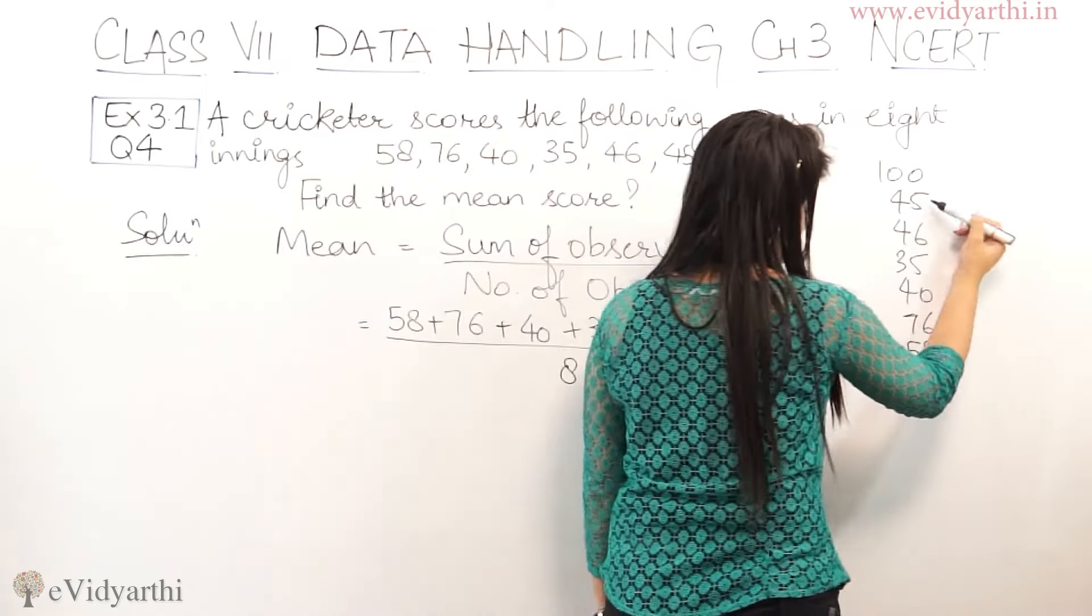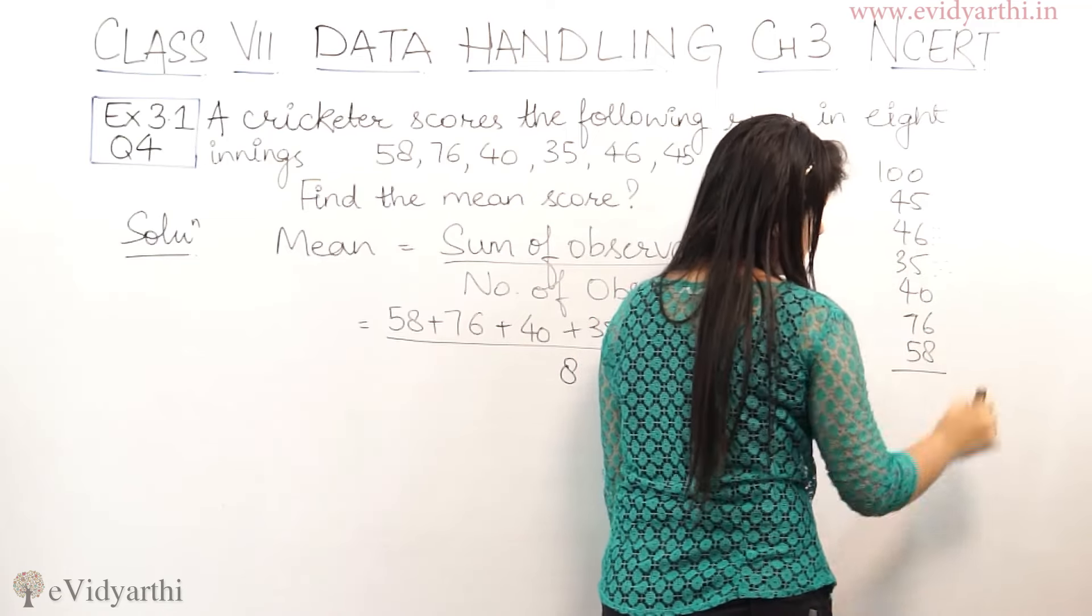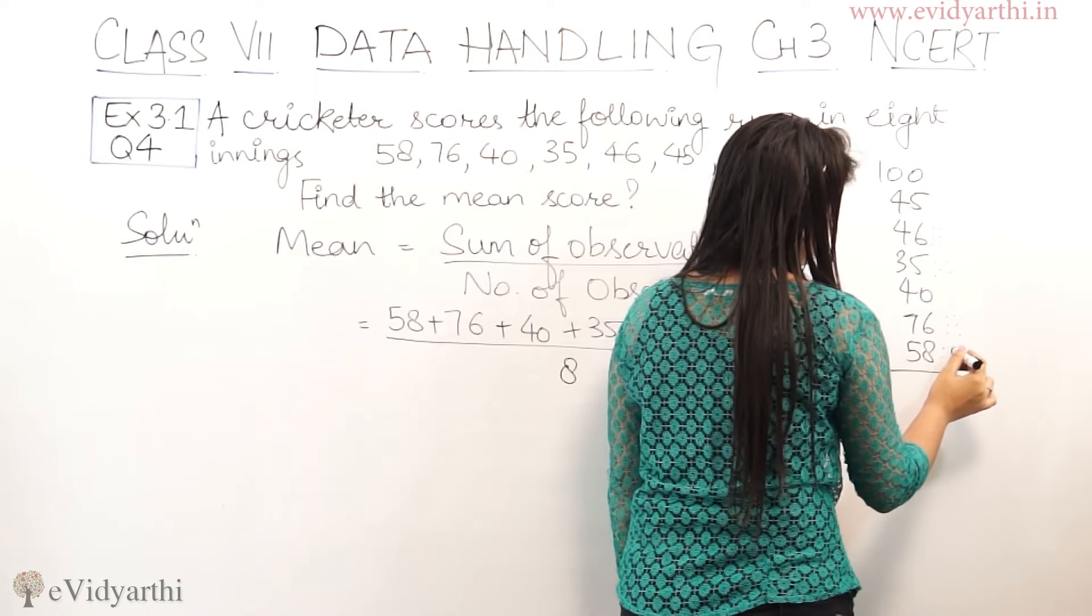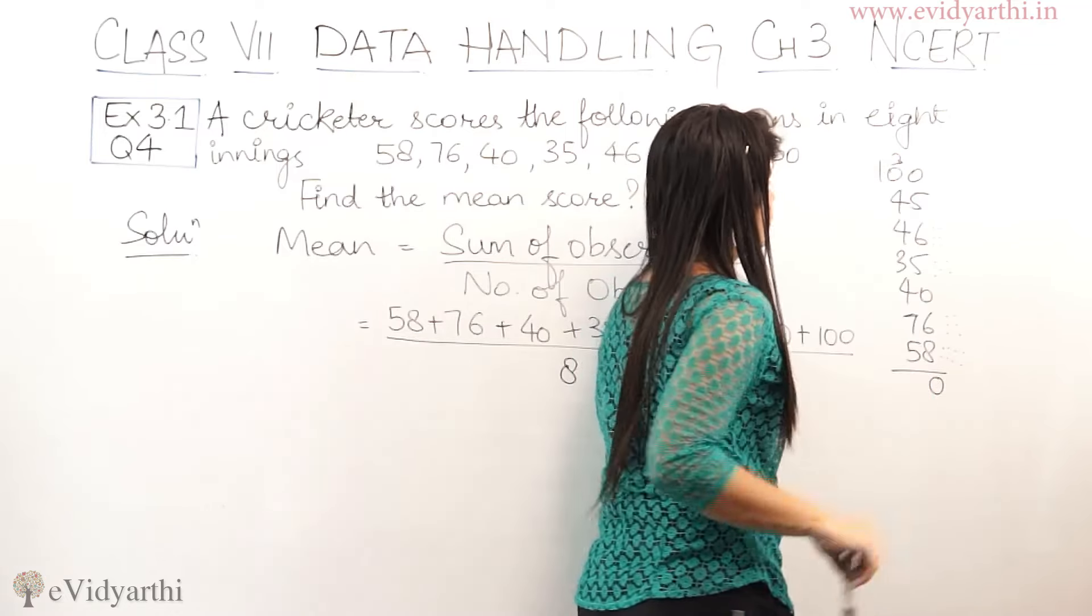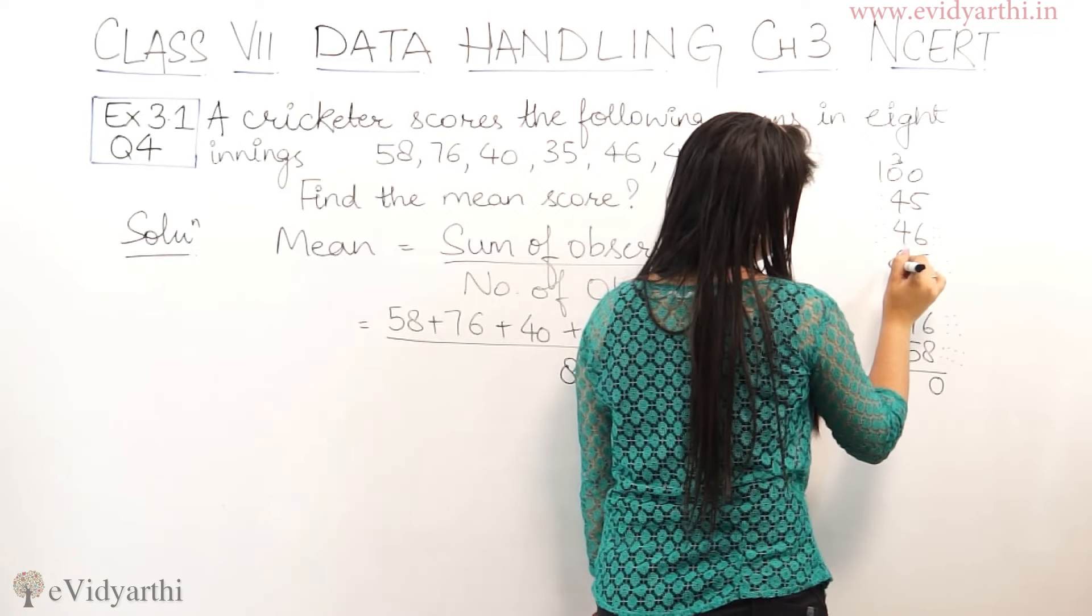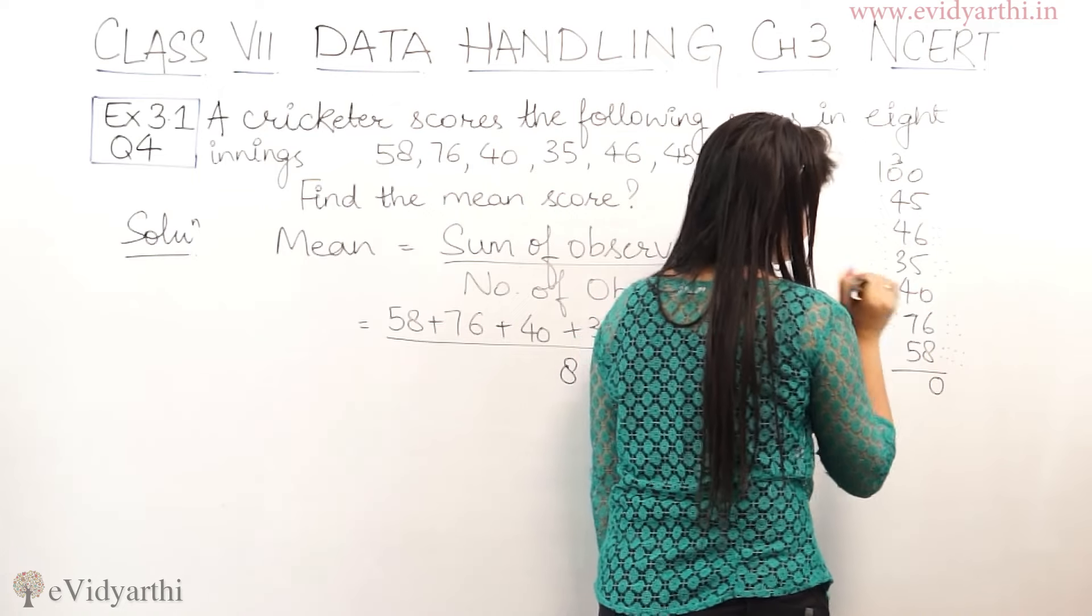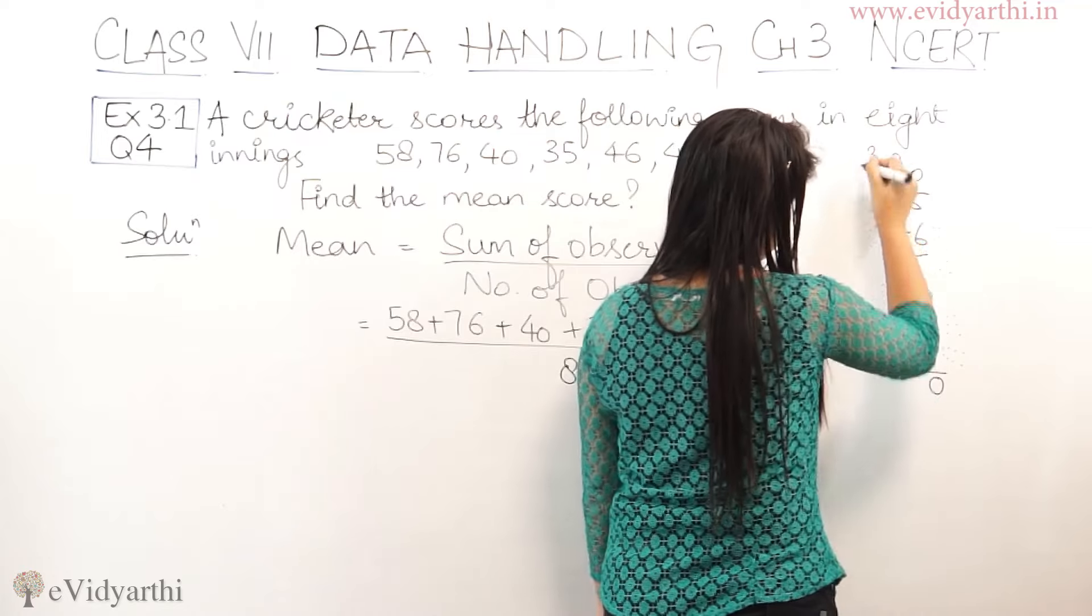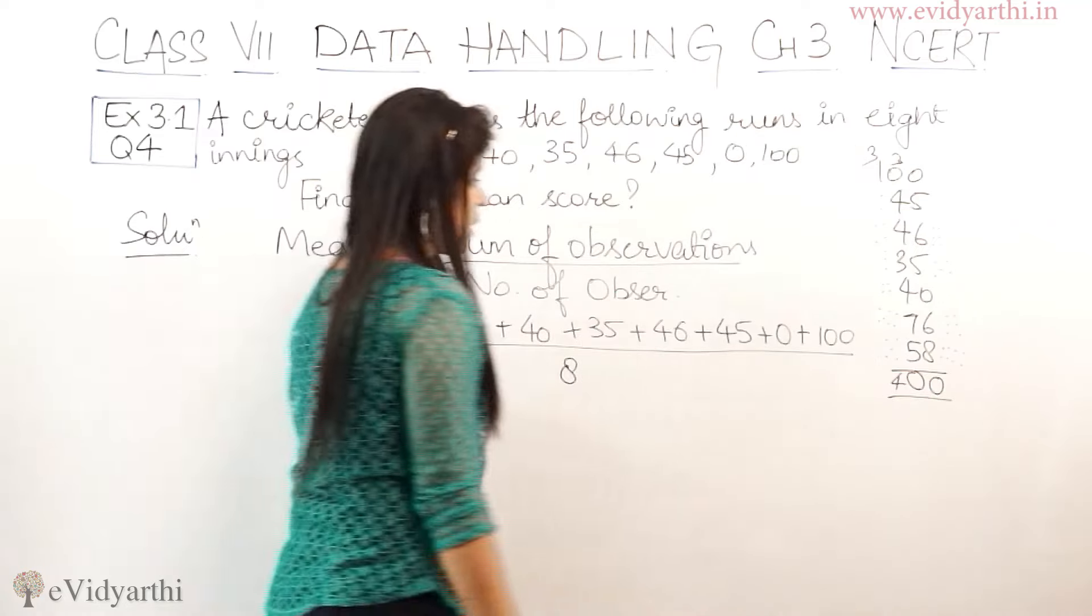Let's add these numbers. Working through the addition step by step, the sum comes out to be 400.